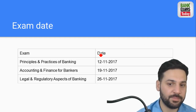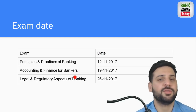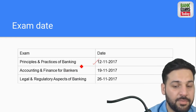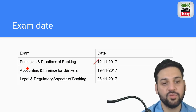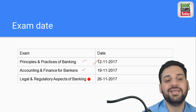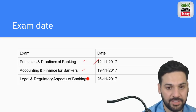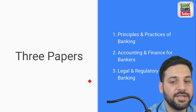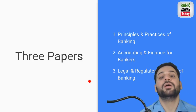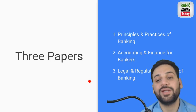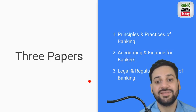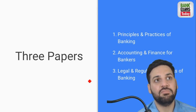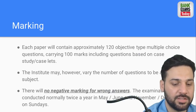There are three papers. The application link I will provide in the description below. The first paper is on 12th November — Principles and Practices of Banking; second is Accounting and Finance for Bankers; and third is Legal and Regulatory Aspects of Banking. The papers are on 12th, 19th, and 26th November, held on Sundays. Now let's talk about the exam pattern.